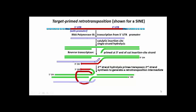After hydrolysis of the second target DNA strand, reverse transcription of the second retrotransposon DNA strand is primed from the 3' end of the cut second target site DNA.